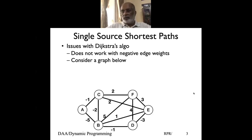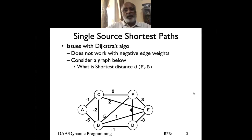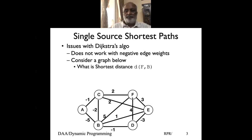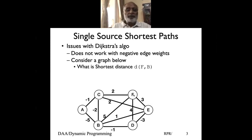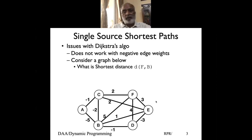Look at the graph below. Can someone tell me what is the shortest distance between F and B? If I were to use Dijkstra's algorithm starting from F, what distance would it give me, and what actually is the shortest path between F and B?